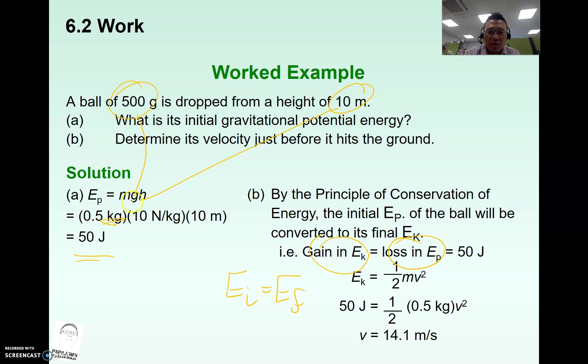On one side you work out the potential energy, and the final energy is actually converted to kinetic energy — which uses the formula ½mv². With the two equations side by side, you can solve for the unknown.